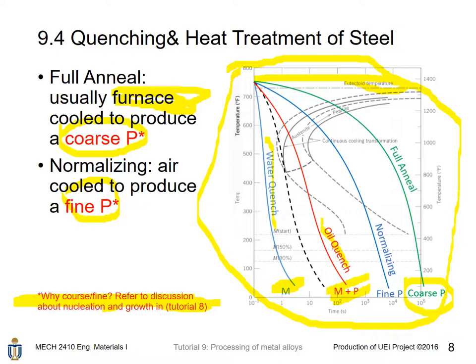In full annealing, which means the cooling rate is the lowest, it will produce coarse pearlite. It usually involves using a furnace to cool the steel piece from a temperature above the eutectoid temperature. For normalizing, the cooling rate is higher than full annealing and involves air cooling to produce fine pearlite.